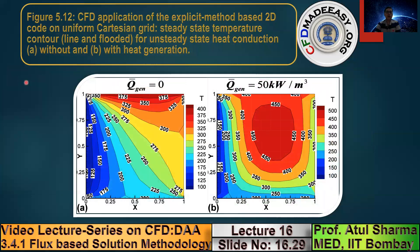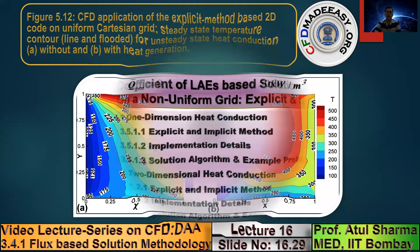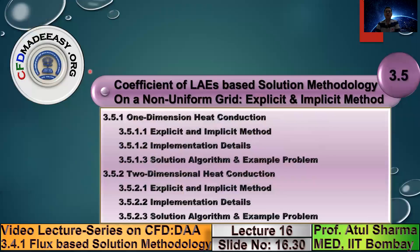In the book, there is an example problem with figure 5.12, showing steady-state temperature distribution for heat generation of 0 and 50 kW/m³. With this, the first solution methodology — flux-based solution methodology — is complete. Now moving into the second solution methodology: the coefficient of linear equation-based methodology.